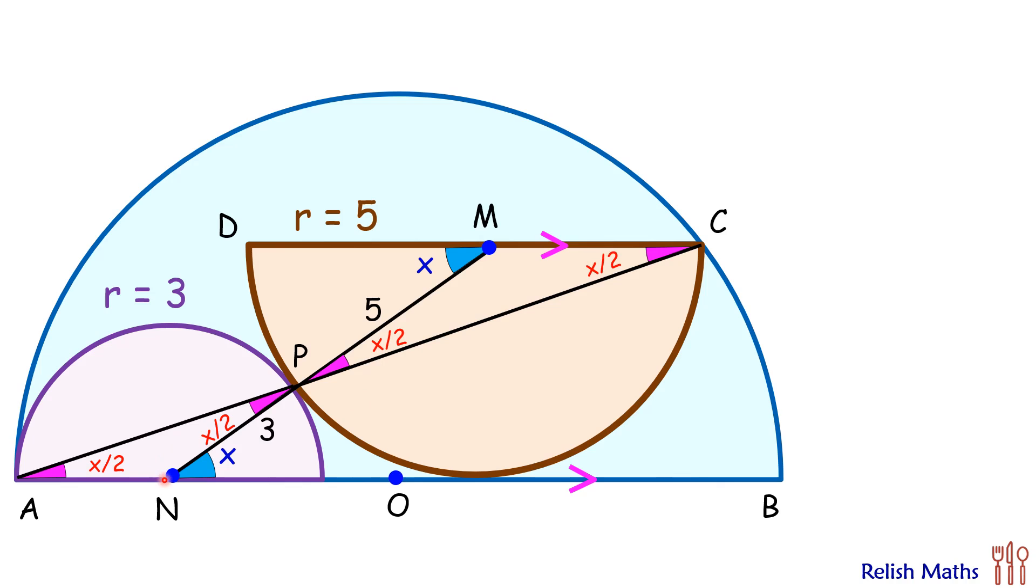Now if you'll see here, NM is a straight line and AP and PC is a line which is making equal vertical opposite angles. Thus we can say that AP and PC are in a straight line, or AC is a straight line.